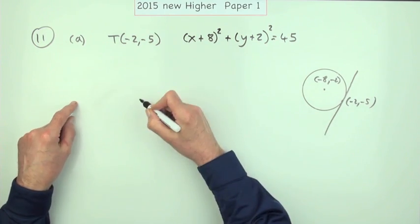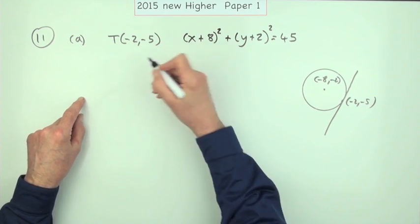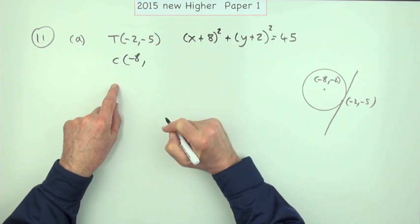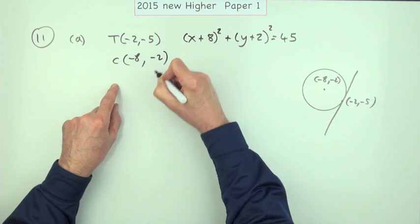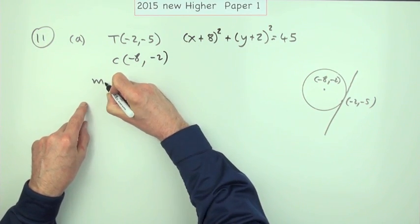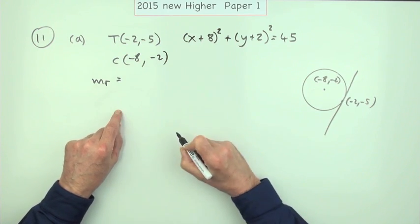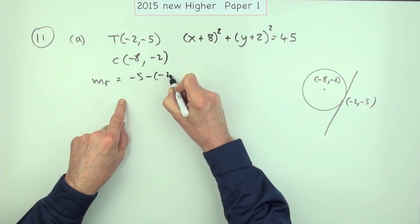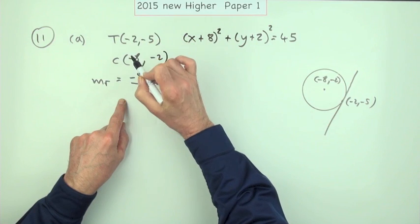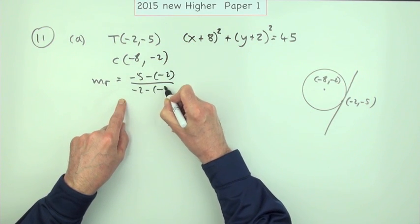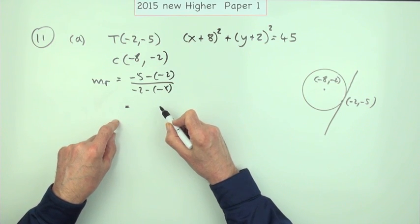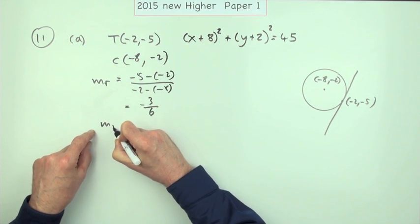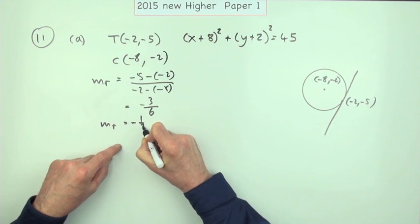You might just start off by saying: what's the centre of this circle? The centre is going to be negative 8, negative 2 — what's being subtracted in the equation. So the gradient of the radius will be y2 minus y1: negative 5 take away negative 2, over x2 minus x1: negative 2 take away negative 8. That gives negative 3 over 6, so the gradient of the radius is negative one half.